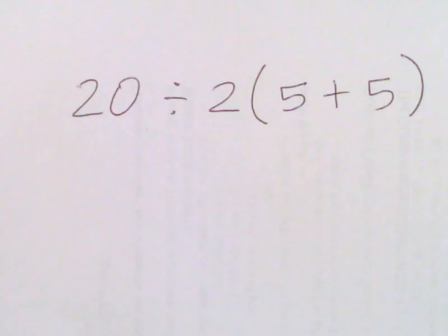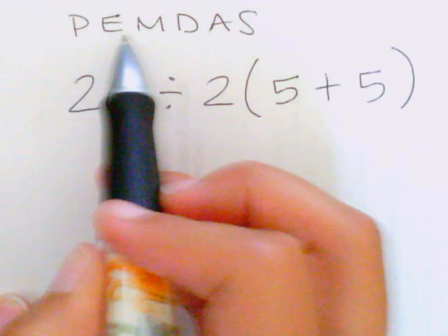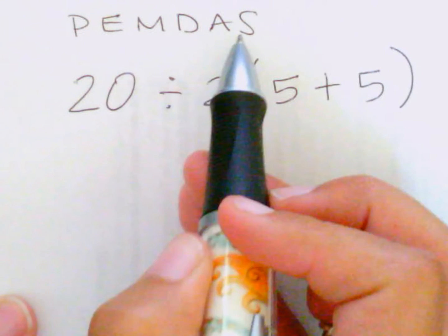Okay, we're reviewing order of operations for a GED preparation. The order of operations is PEMDAS, as I'm sure you remember: Parentheses, exponents, multiplication, division, addition, subtraction.